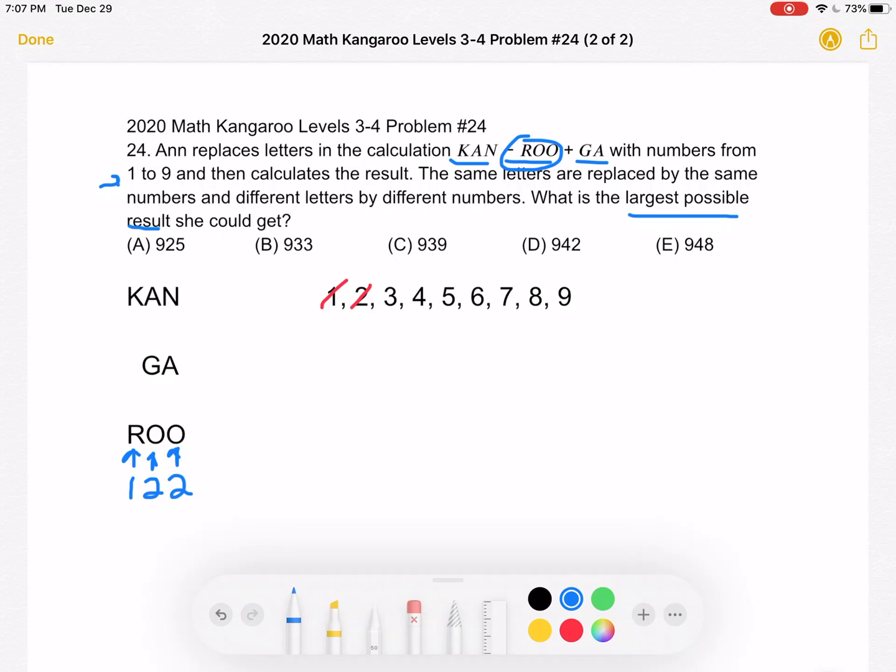Now, we know that we want the sum KAN plus GA to be the greatest possible sum if we want the largest possible result. So again, let's look at the hundreds place, right? The one that will have the greatest effect on the sum.